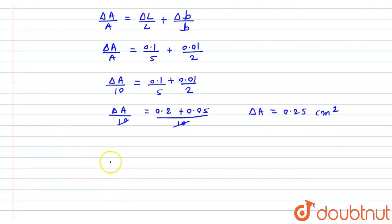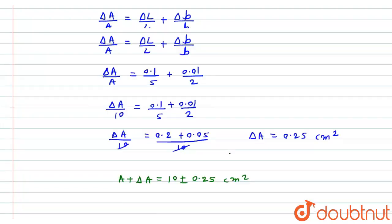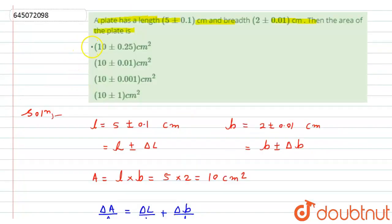That is A plus delta A will become equals to 10 plus minus 0.25 centimeter square. So according to given options, option first will be the correct answer for this question. This is the required solution. Thank you.